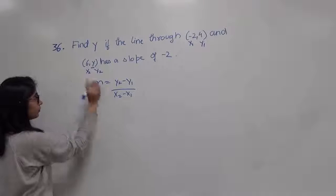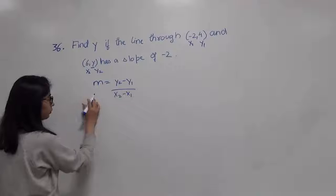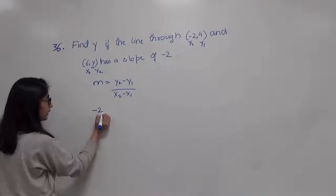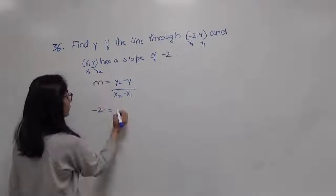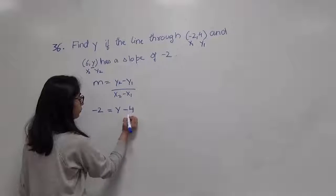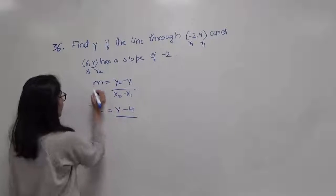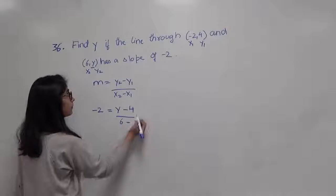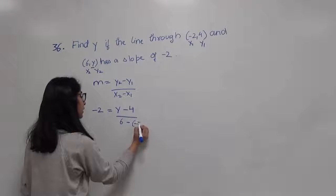And I just put them in here with the slope. So slope is negative 2. y2 is y minus y1 is 4 over x2 is 6 minus x1 is negative 2.